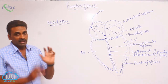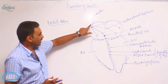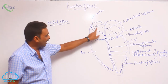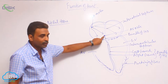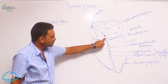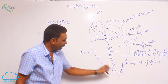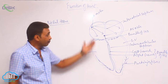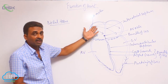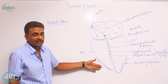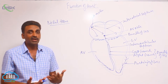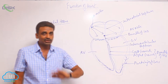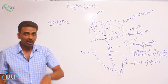When the SA node generates nerve impulses, the atria will contract. When that impulse is taken by the AV node and travels through the bundle of His and its left and right branches into the walls of the ventricles, the ventricles will contract. Remember, atria will contract first, followed by contraction of ventricles. There is no simultaneous contraction of both atria and ventricles, because of the presence of fibrous tissue between the atria and ventricles.